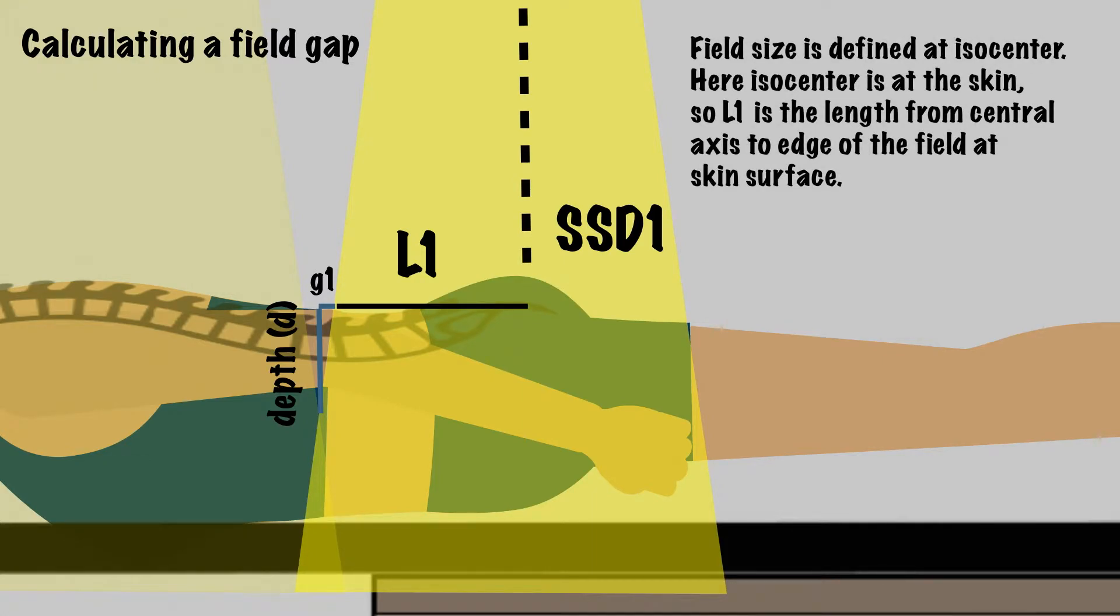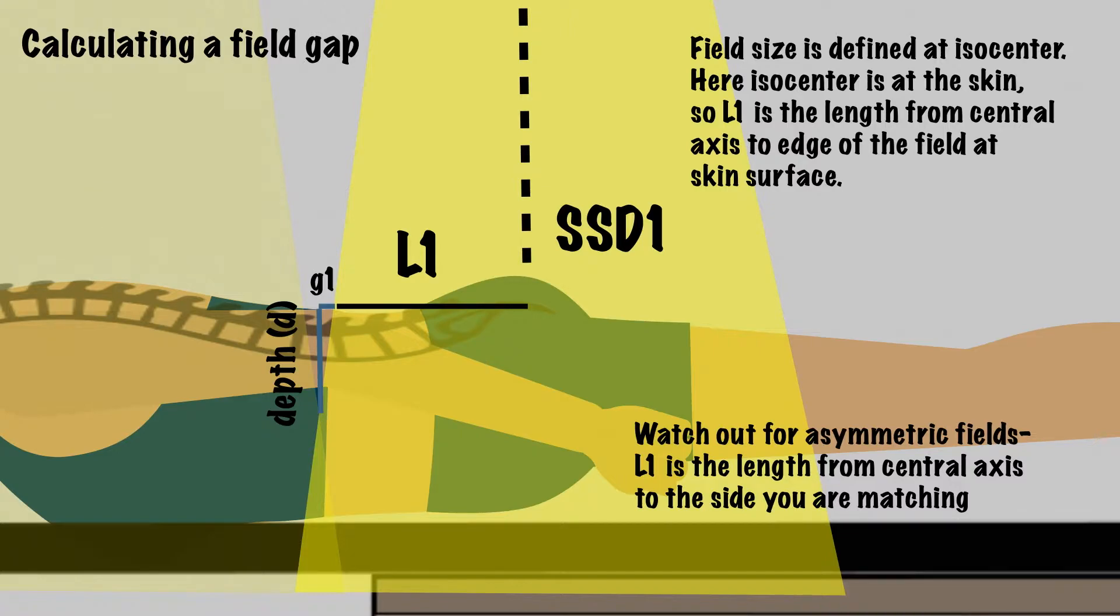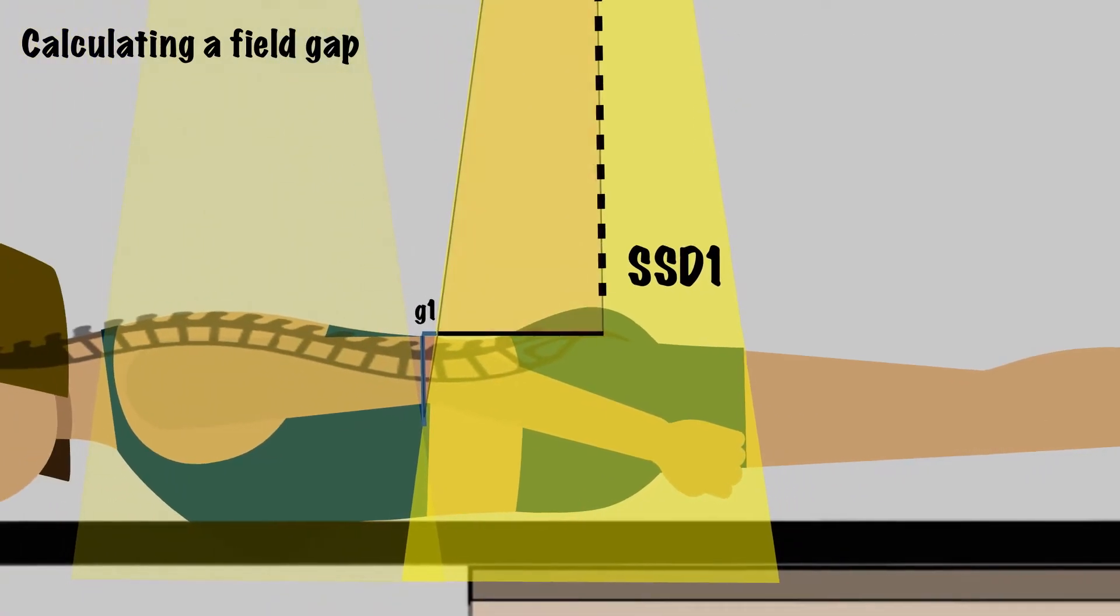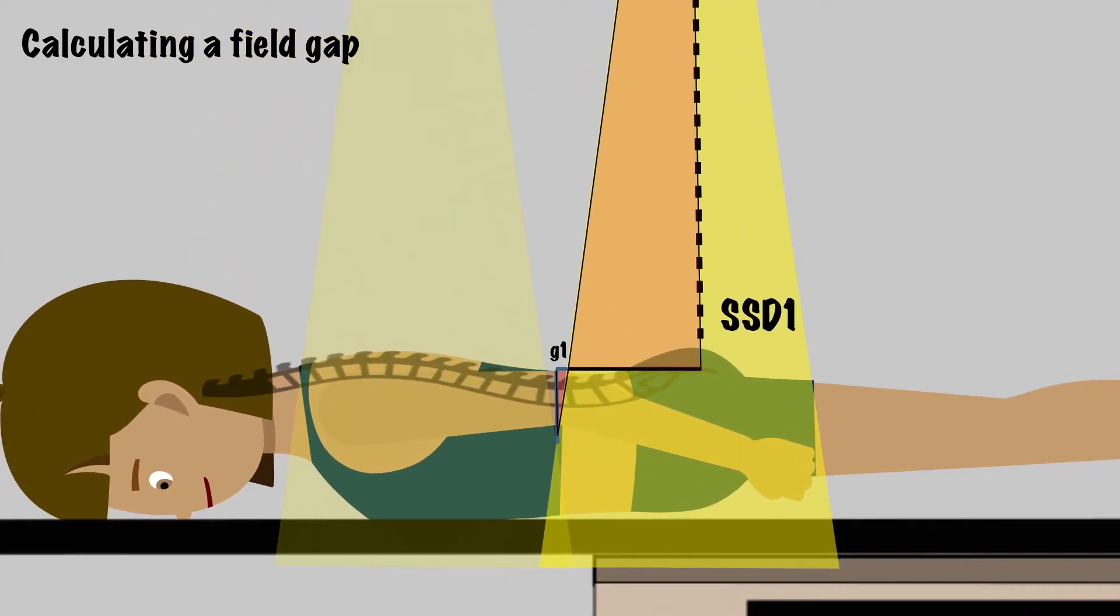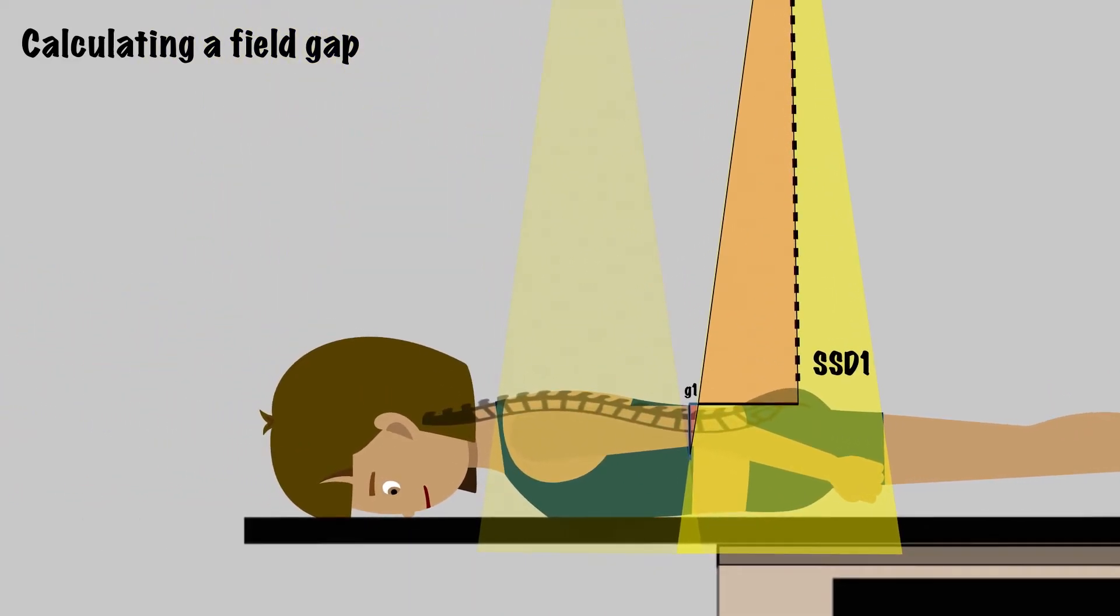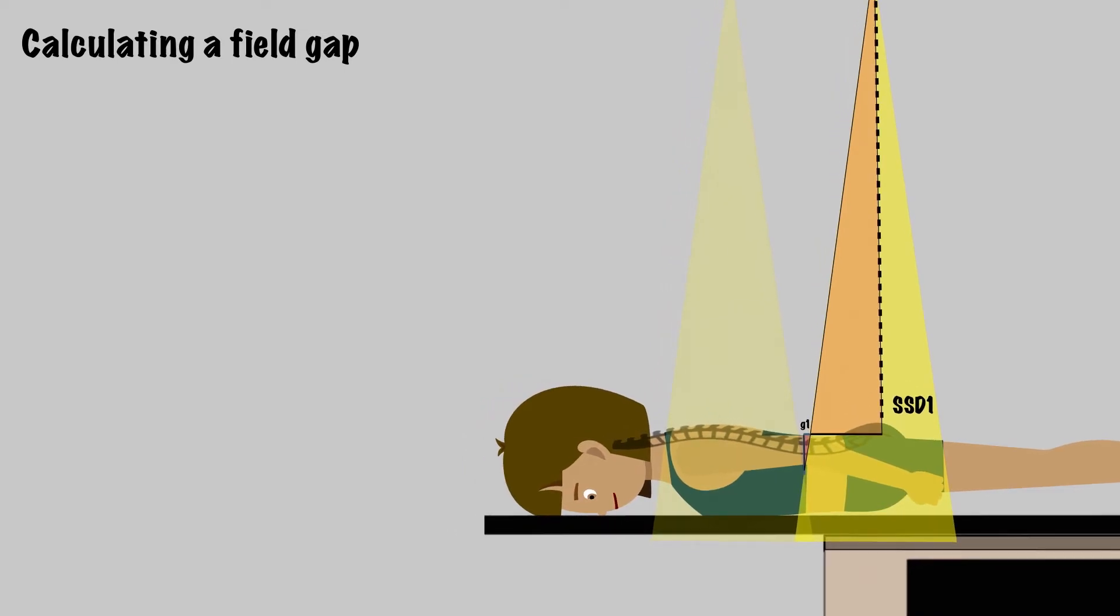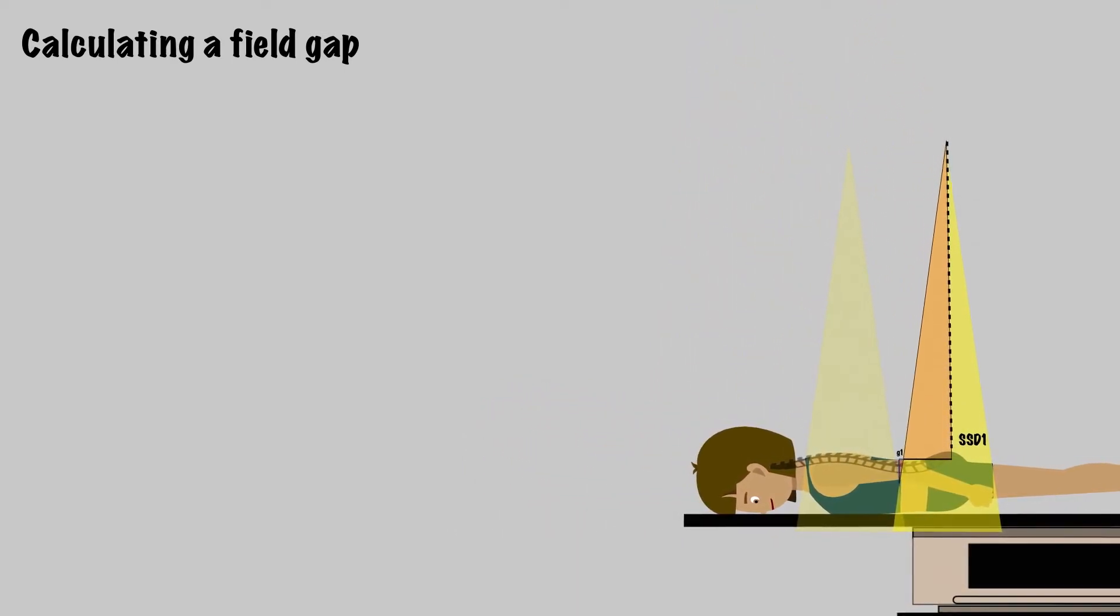In our pictured example, isocenter happens to be at skin, so L1 is measured at skin surface. Keep in mind that your fields can be asymmetric, so you want to be looking at the length of your field at isocenter, from central axis to the edge at which you're matching. This now gives us two triangles, and we'll take advantage of the fact that they're similar triangles. These two triangles are similar in that they have the same angles and are proportional to each other, so we can relate them to each other.